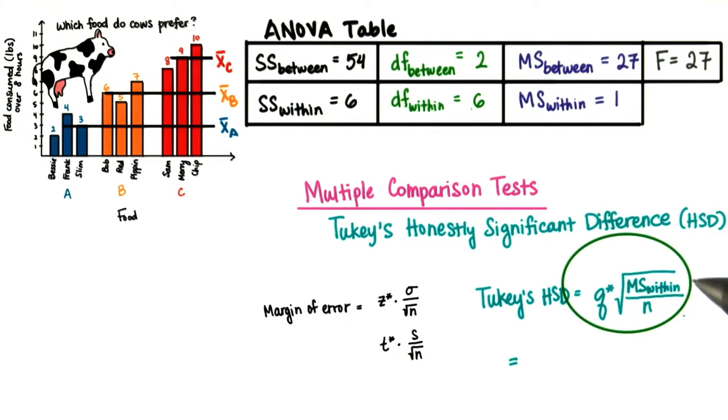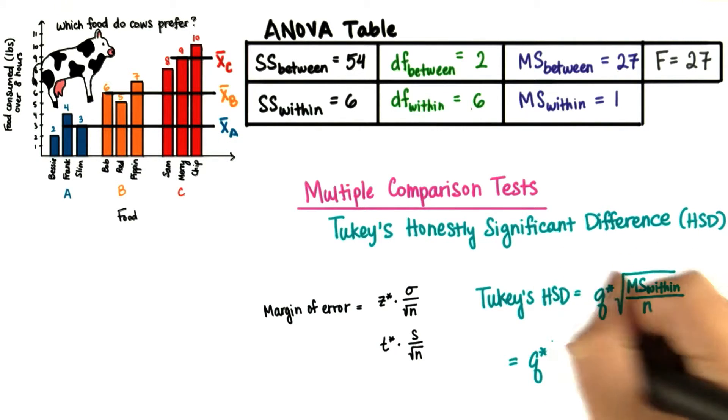You might ask, how is this similar to these? Well, the mean square for within subject variability is the pooled variance. It's just the average square deviation of each value from its respective group mean. Therefore, the square root is the pooled standard deviation.